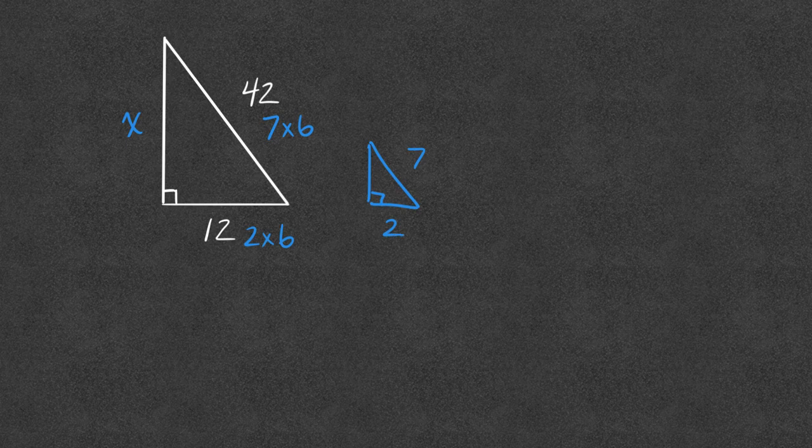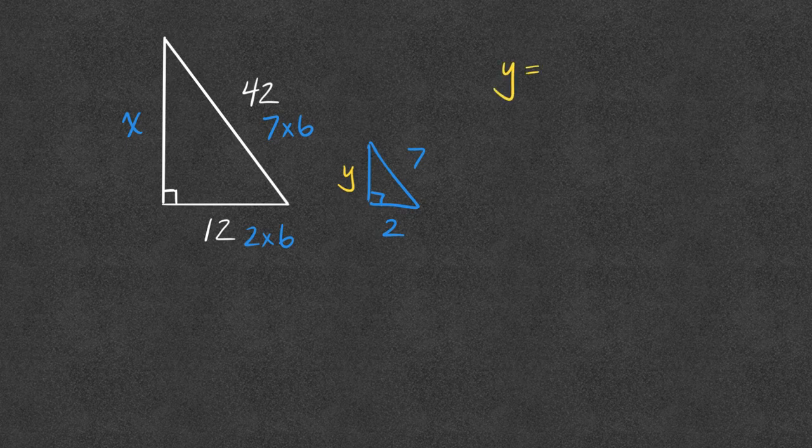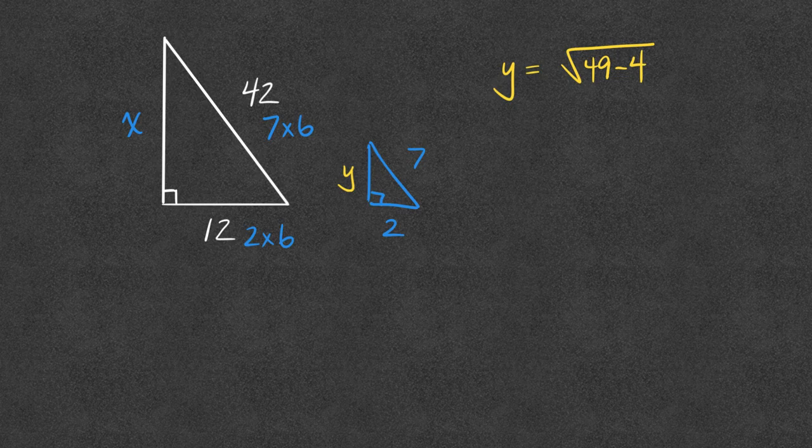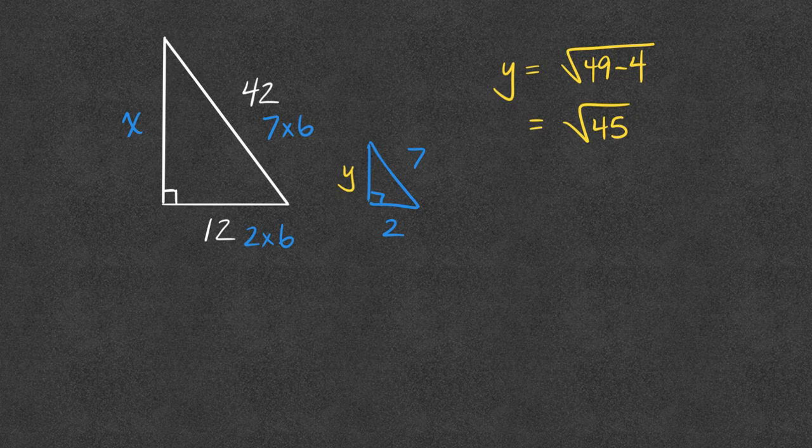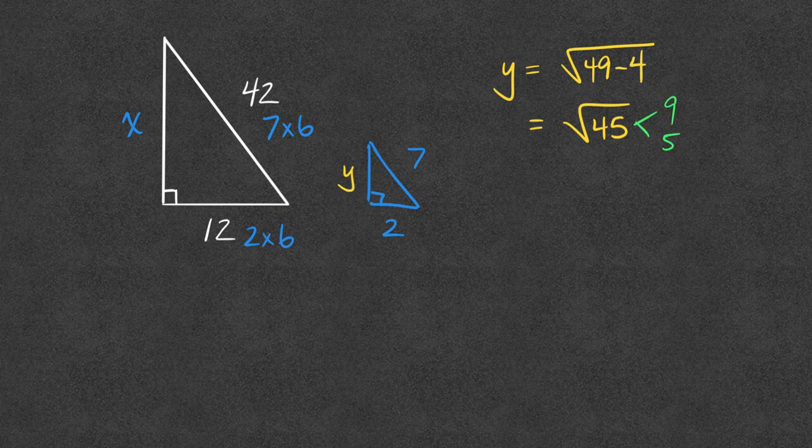Well, then I can go through and I can find the missing side on the blue triangle and blow it up. So my y is going to be root 49 minus 4, because I'm solving for one of the smaller sides. That's going to give me root 45. And look, even in this instance, I can see that that's a 9 times a 5. So I can reduce that radical right now, keeping my numbers small.